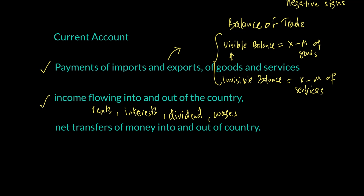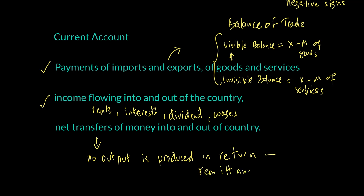The last part of the current account is net transfers — money coming from abroad for which no output is produced in return. A good example is remittances: payments by local workers working abroad whose money comes back into the country. Similarly, if a relative abroad sends a private gift, that would also be counted as a remittance in the account.